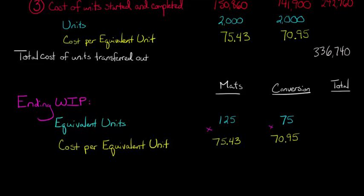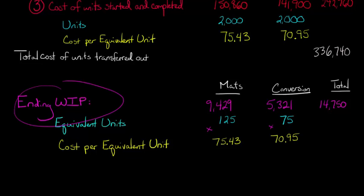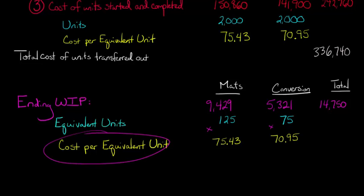For direct materials, ending WIP is $9,429, and for conversion costs it's $5,321. Adding those two together gives us $14,750 total ending work in process. That is our ending work in process calculated by applying costs based on the FIFO method we used to determine the cost per equivalent unit.